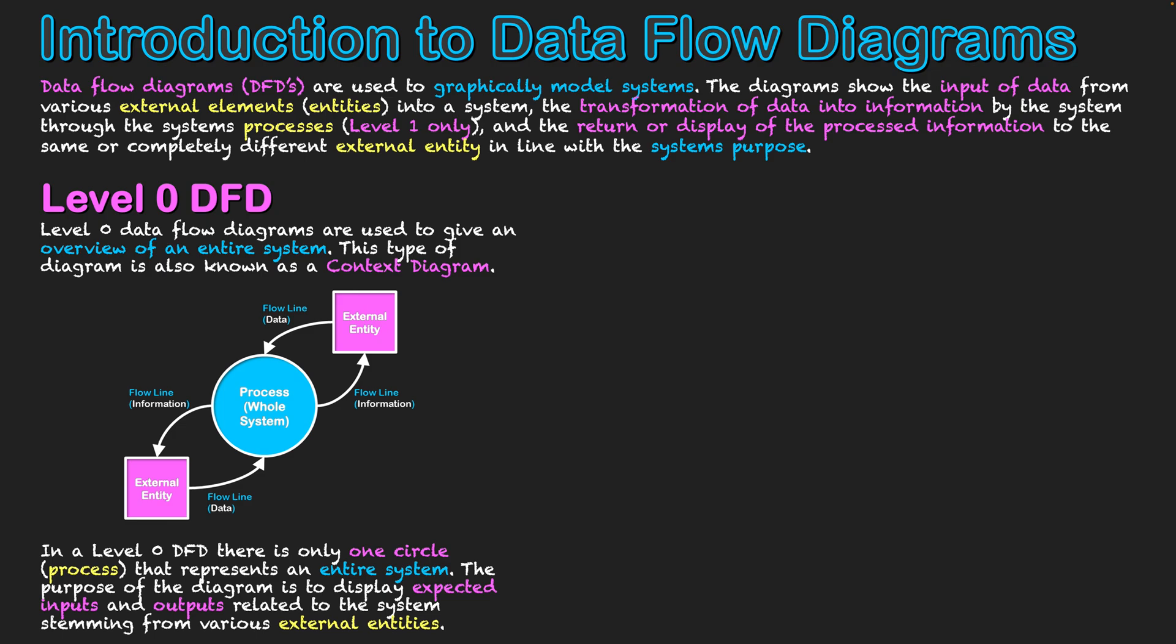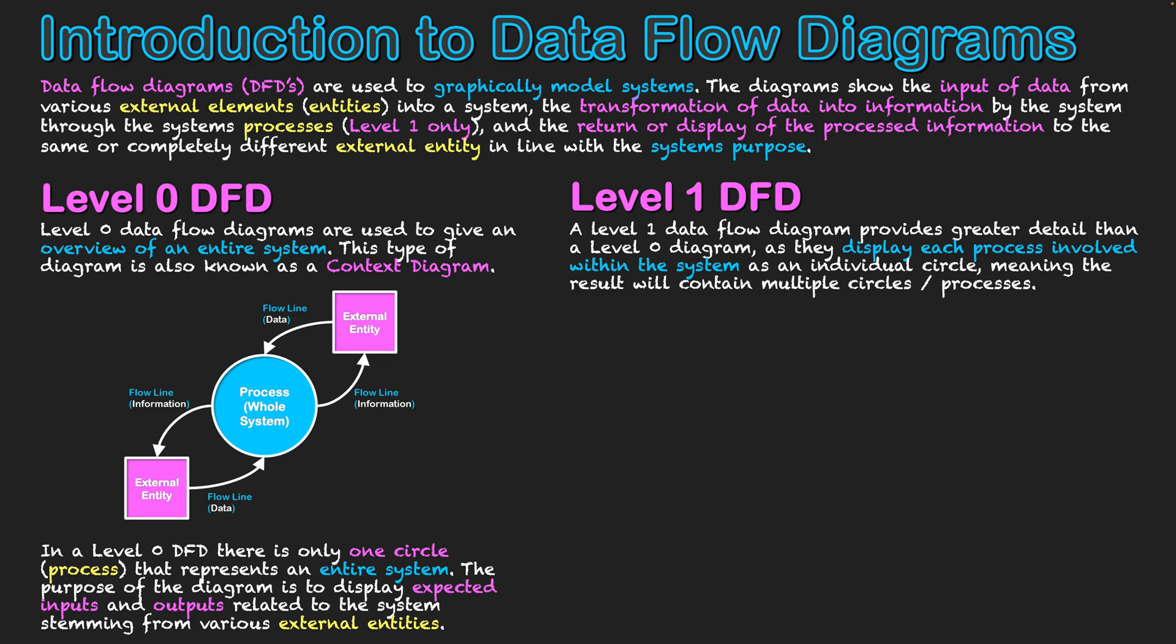The next level is a level 1 Dataflow Diagram, where we go into greater detail. That single circle that we had at the center of our level 0 now gets exploded into multiple processes, sub-processes of the system, gradually changing the information in different ways in order to create an expected outcome for an external entity.